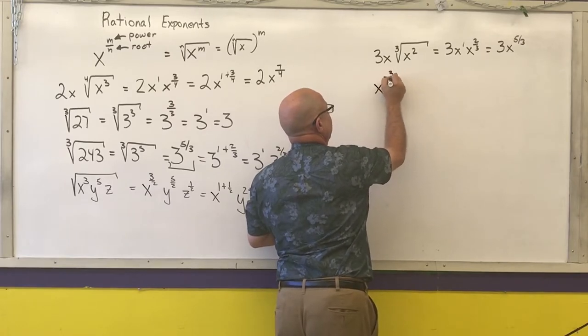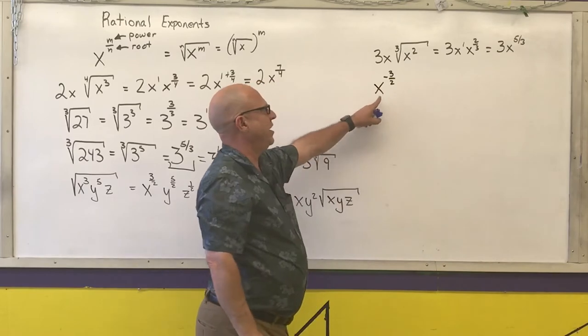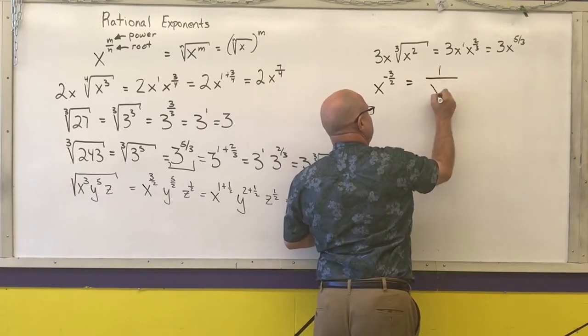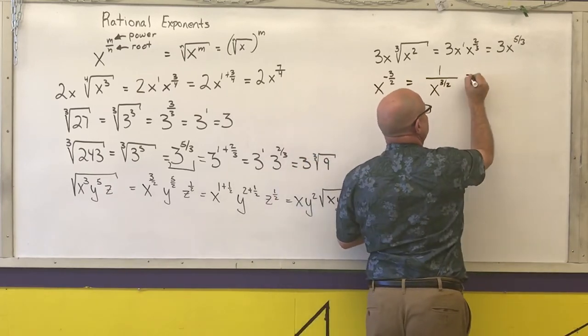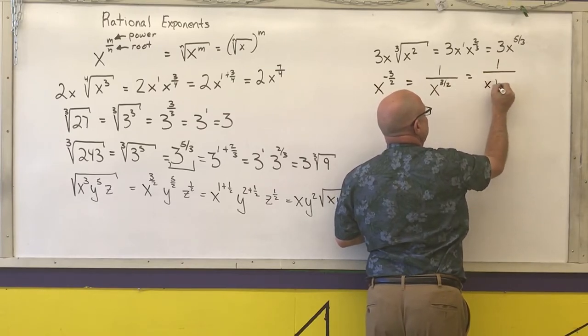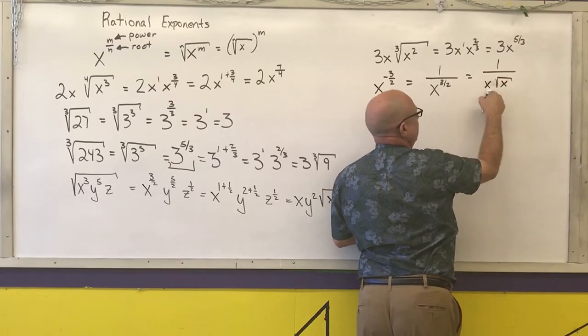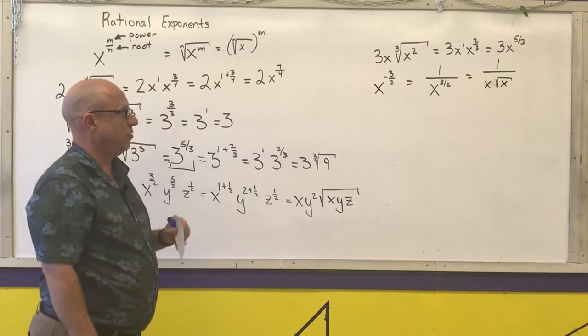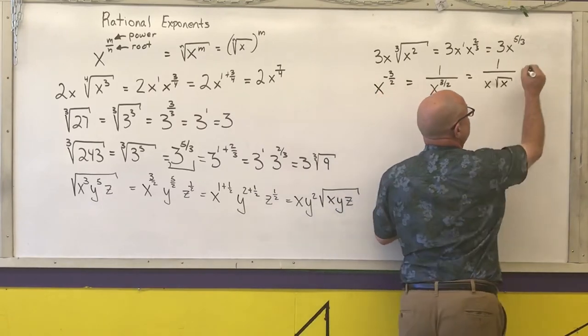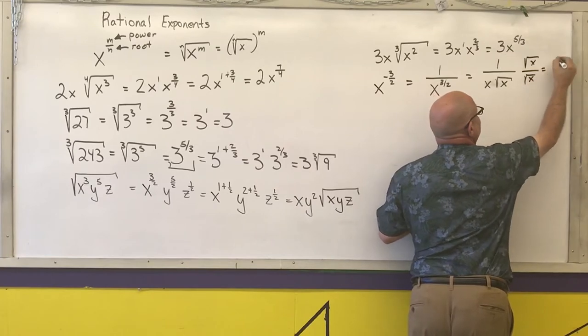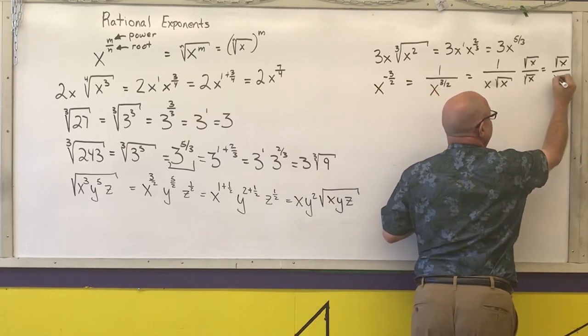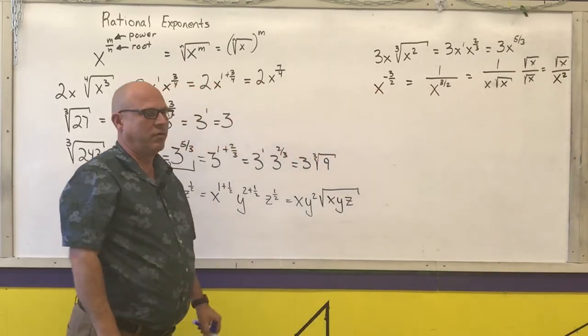X to the negative three-half. Remember that a negative exponent says turn it over and then change the exponent to a positive. That would be the exponential form. That's one-and-a-half. And that would be radical form. Now, here's the thing: Can I have a radical in the denominator? No. So on the top, I have the square root of x. The square root of x times the square root of x is x. X times x is x squared. That would be my fully simplified form for that answer.